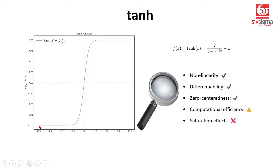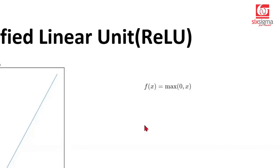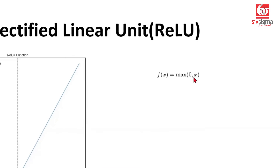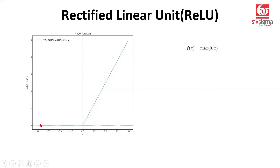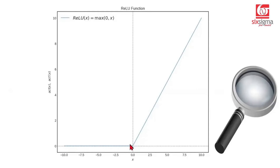One activation function which happens to be very popular, especially for hidden neurons, is known as the rectified linear unit — ReLU — and it looks like this. Its function is defined as the max of 0 and x, a very simple function. When you have values less than 0 it will always remain 0, and the moment you are ahead of 0, it will attain the value just like the line y equals x. Is this non-linear? Again, people might argue this is linear, but this is not a single line — it is piecewise linear, not overall linear.